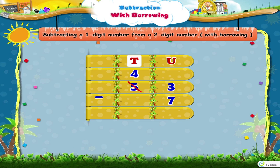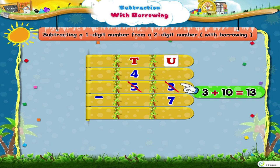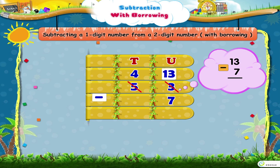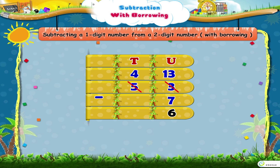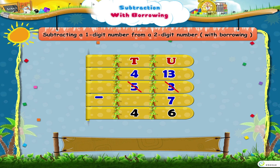That is 4. But the units place has 10 more. So, instead of 3, it has 13. Now, let us subtract. 13 minus 7 equals 6. We write 6 in the units place. Now, the 4 in the tens place has no number below it for subtracting. So, we write the 4 in the tens place of the answer. So, the answer is 46.